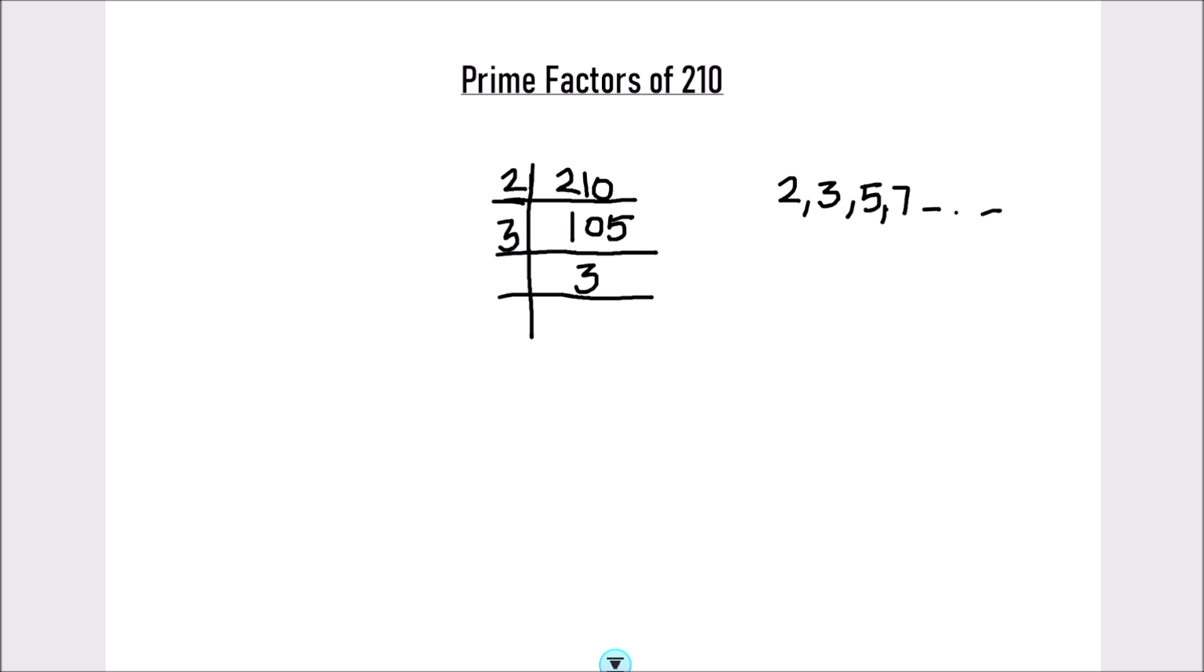3 times 3 is 9, 1 is remainder, this becomes 15 and 3 times 5 is 15.